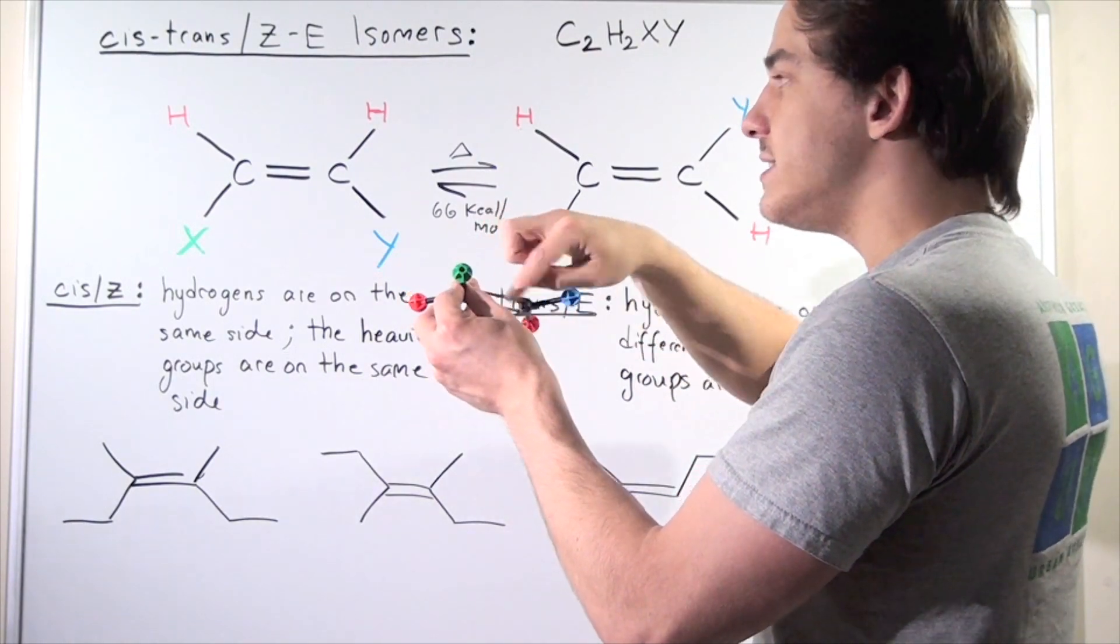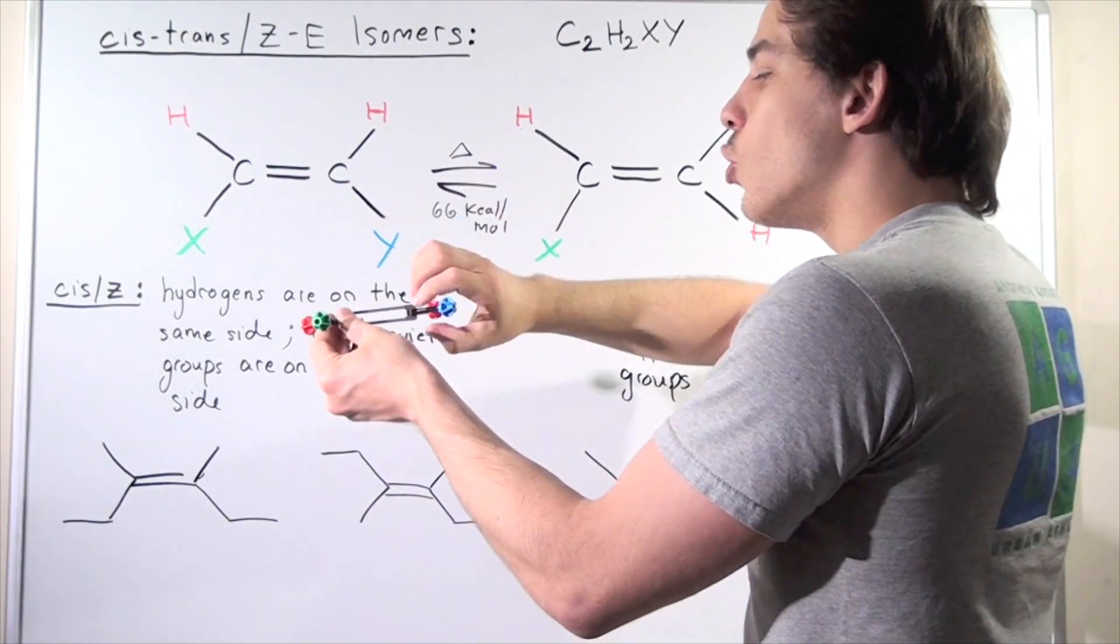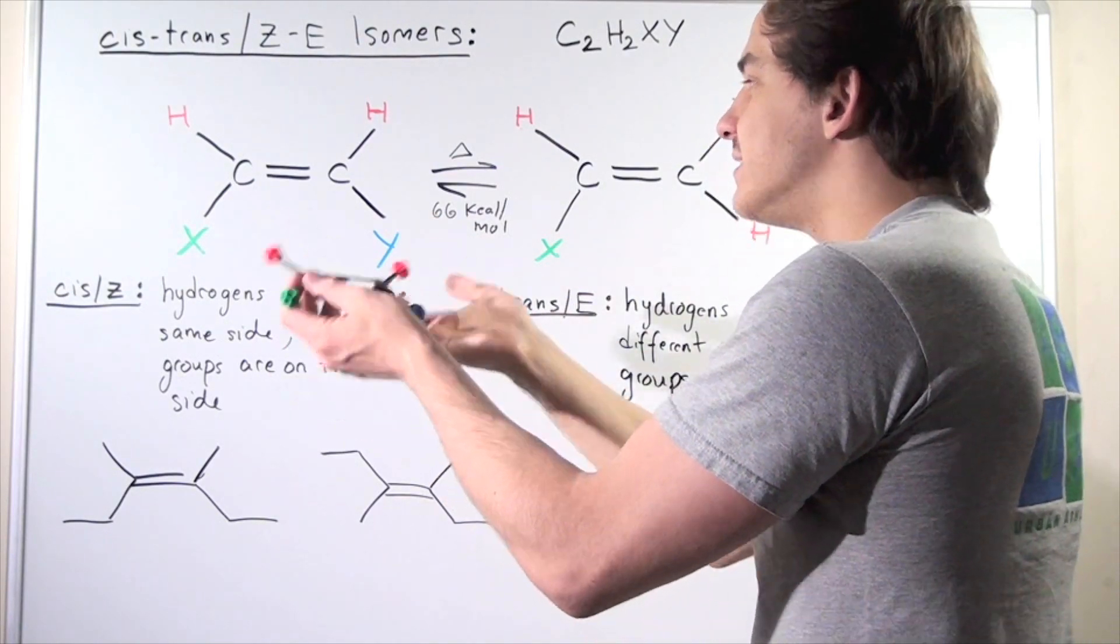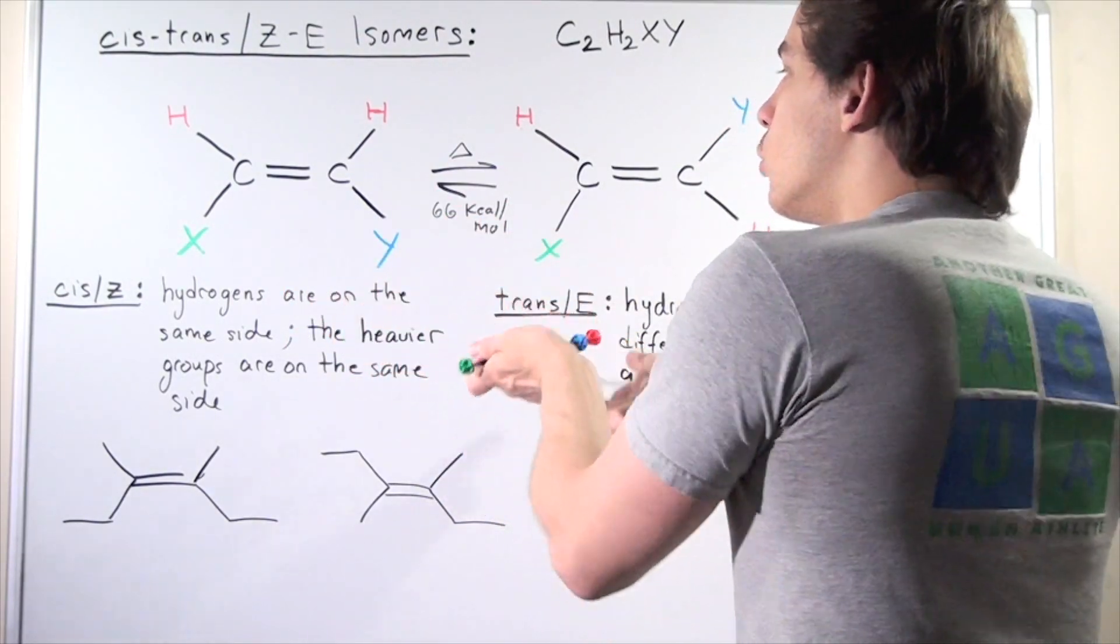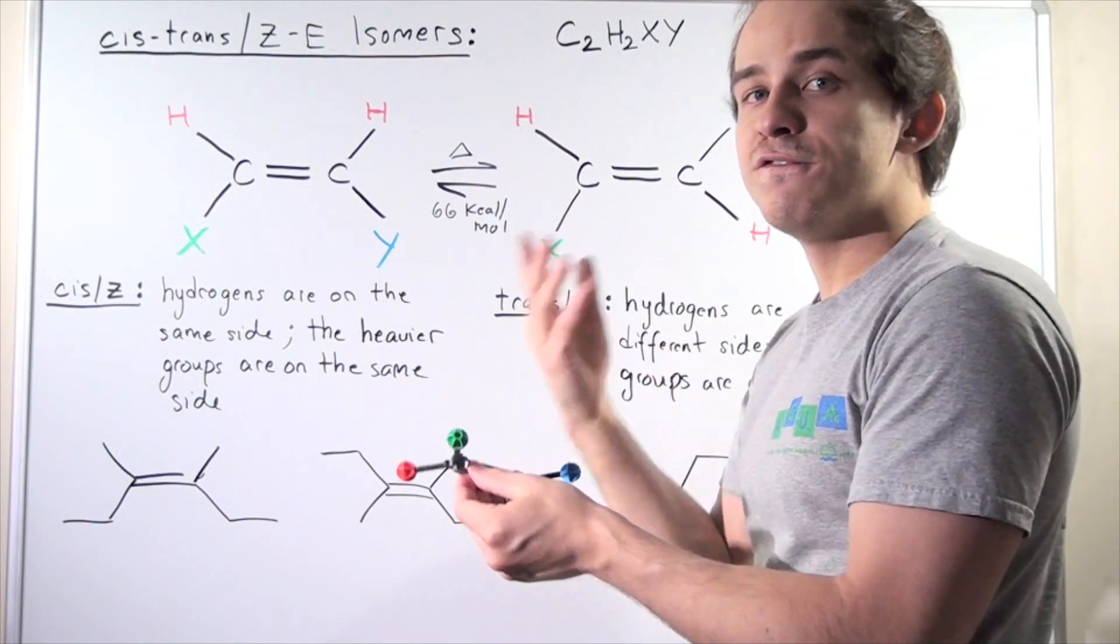And our bond, our C-C bond, the lower C-C bond, will rotate. And then, let's suppose, once it rotates, we take away the energy, and our pi bond reforms, we will get the following molecule.